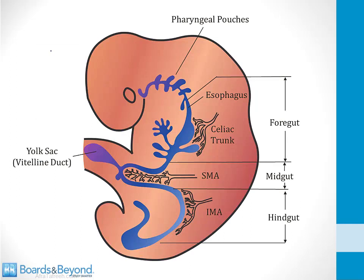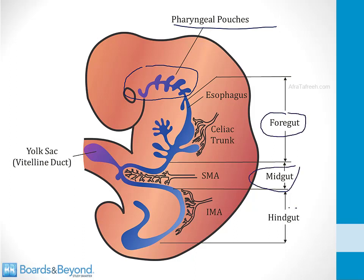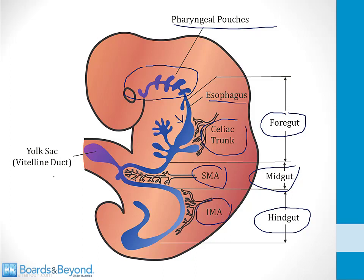As the embryo continues to develop, it forms a long gut tube. The upper portion forms the mouth and pharynx with pharyngeal pouches. The remaining digestive tube is divided into three sections: the foregut, the midgut, and the hindgut. Each section will be supplied by a different branch of the abdominal aorta — the foregut by the celiac trunk, the midgut by the SMA, and the hindgut by the inferior mesenteric artery. The vitelline duct, a remnant of the yolk sac, normally disappears but can persist and cause congenital anomalies.